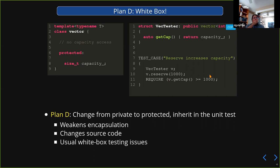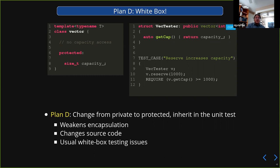This weakens encapsulation — there might be very good reasons why you don't want capacity to be protected. We have public, protected, and private for good reasons. So that's not great, and you do have to go change the source code, but you can actually write your test. This has all the usual white box caveats: you have now coupled your unit testing code very tightly to your implementation. If you rename this member variable, you have to change your unit test code, so you've greatly increased your maintenance burden.